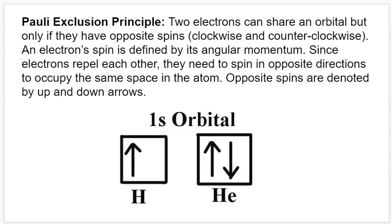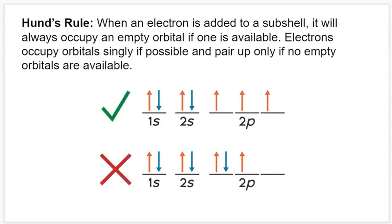The other important rule for filling energy diagrams is Hund's rule: if electrons are being added to a subshell and there are empty orbitals available, electrons will occupy those empty orbitals before they start to pair up, since pairing up causes repulsion. An analogy: if you get on a bus with only one person on it, most people will sit as far away as possible from the stranger rather than right next to them. Electrons do the same thing — they occupy their own spaces before pairing up.